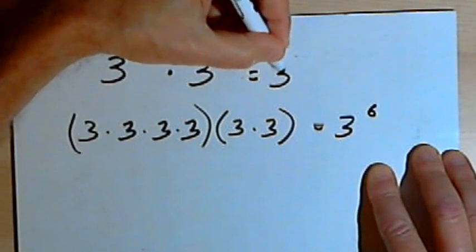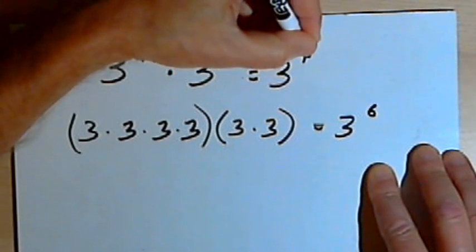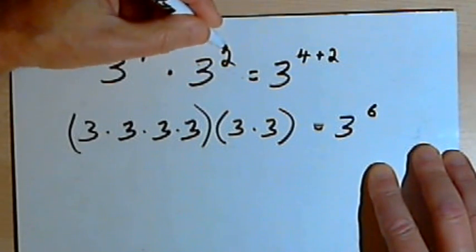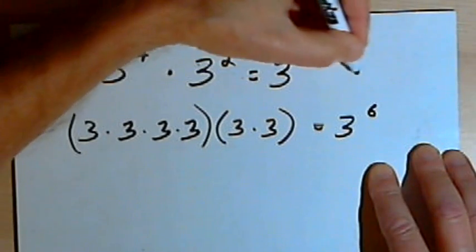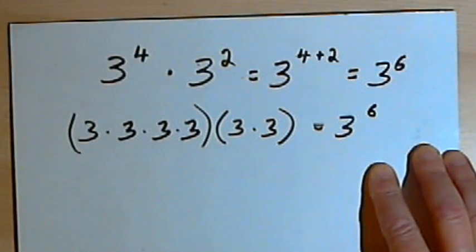So you take that 3, the base, and its new exponent is going to be the sum of the two exponents you started with. So that'll be 3 raised to the 4 plus 2. 4 plus 2 is 6. So it's 3 to the sixth power.